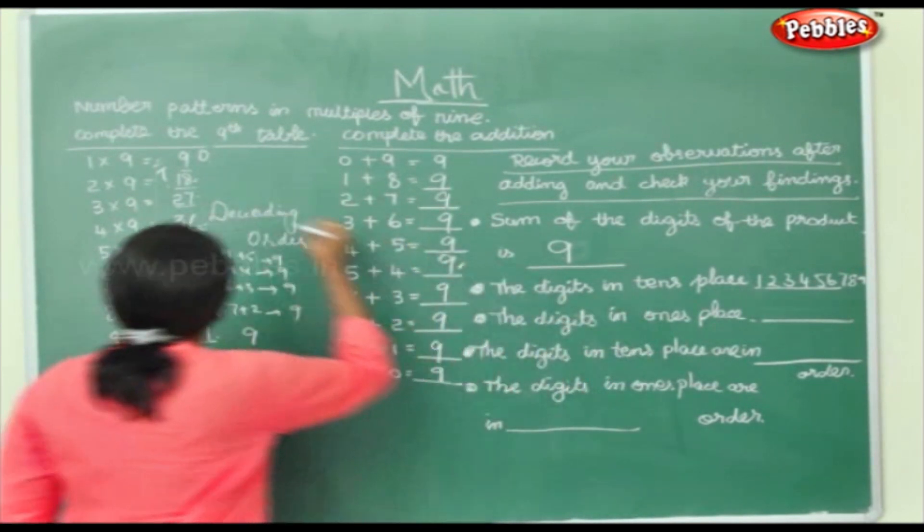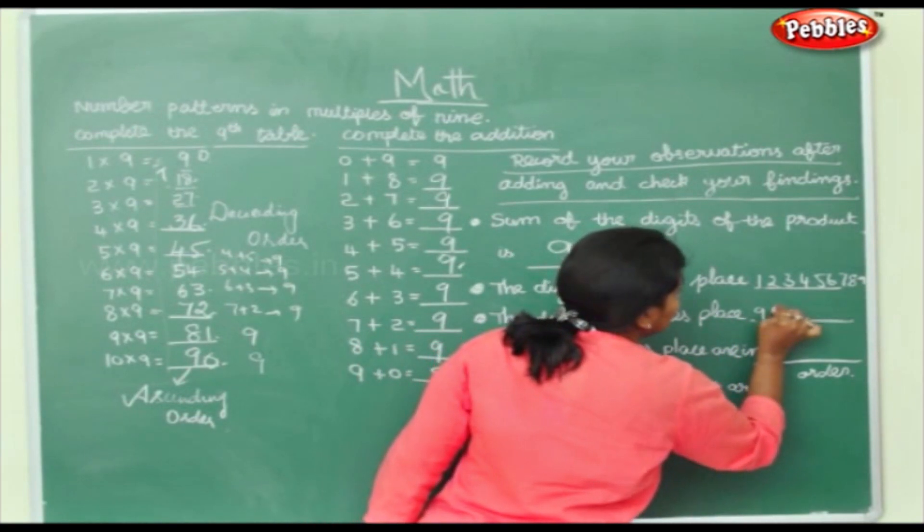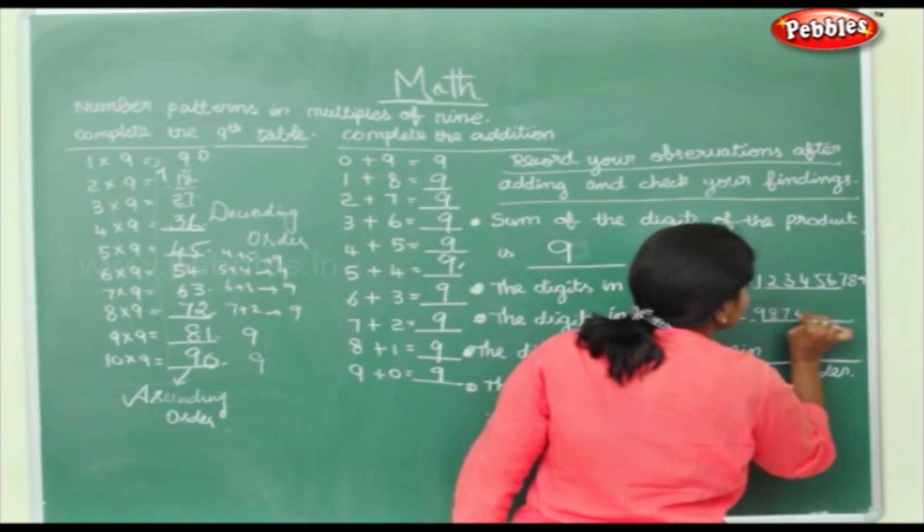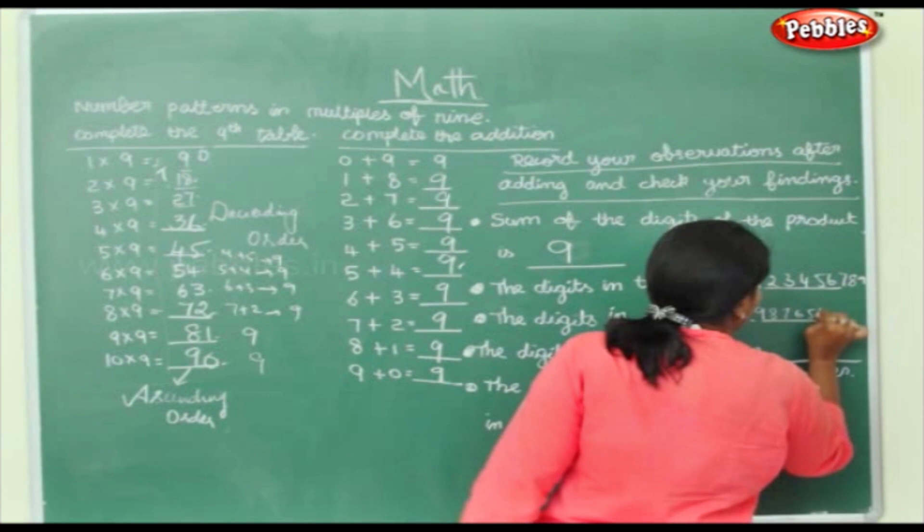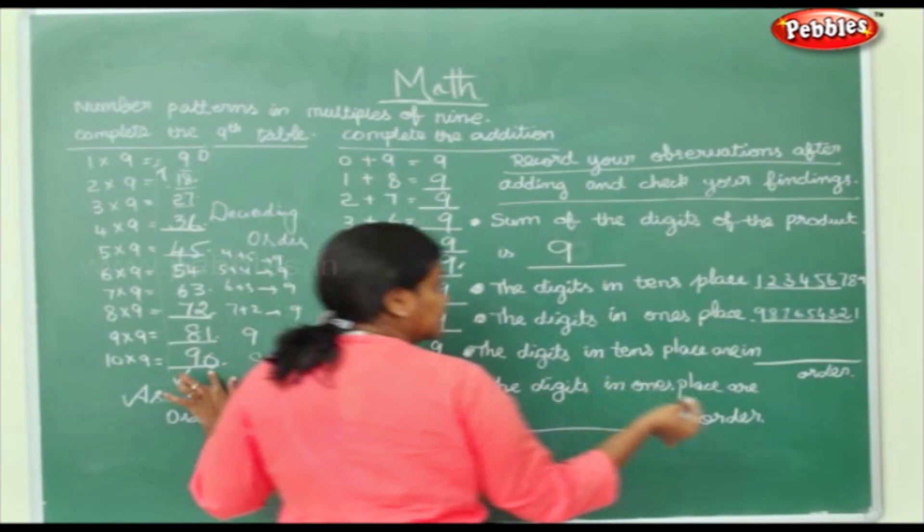The digits in the 1's place, this is your 1's. 9, 8, 7, 9, 8, 7, 6, 5, 4, 3, 2, 1 and 0.